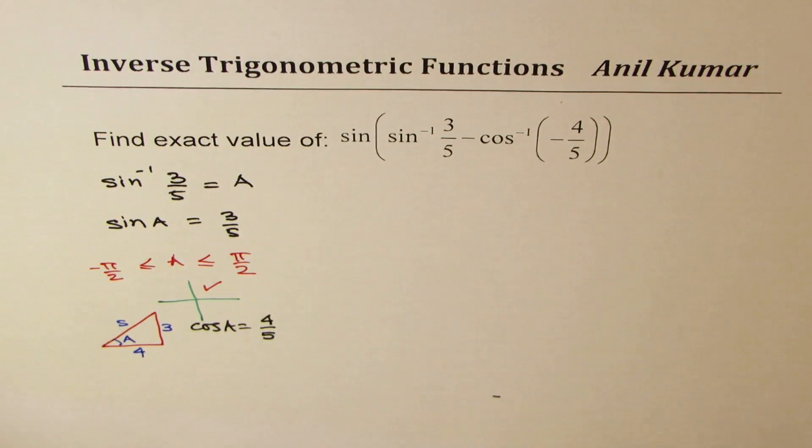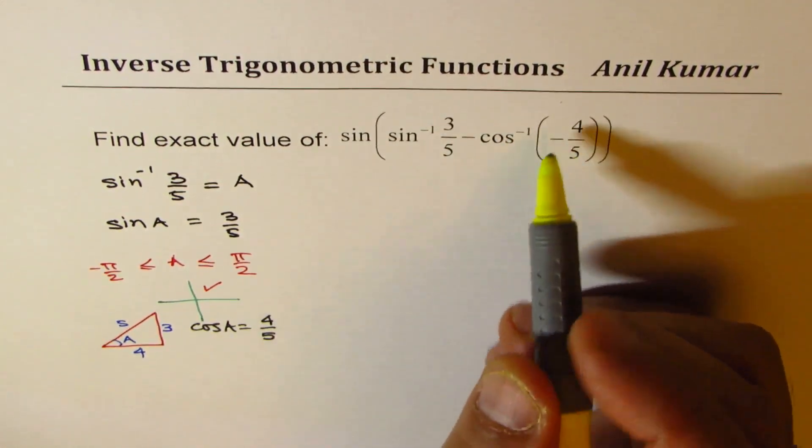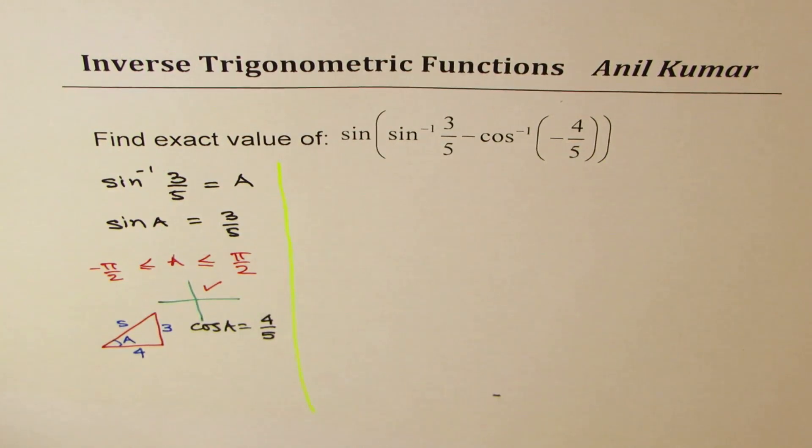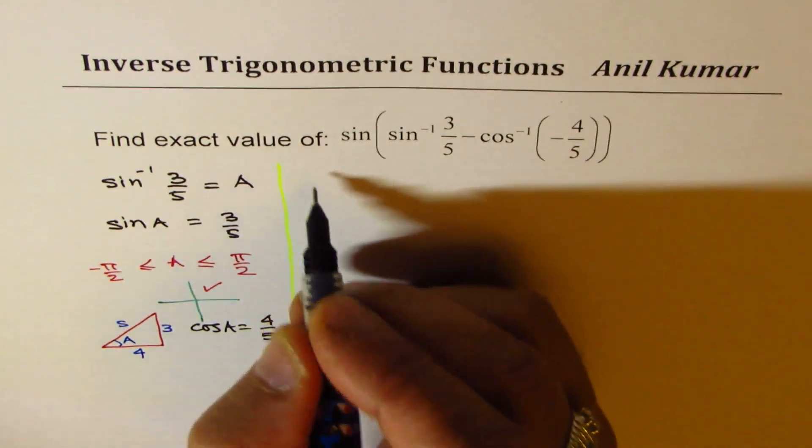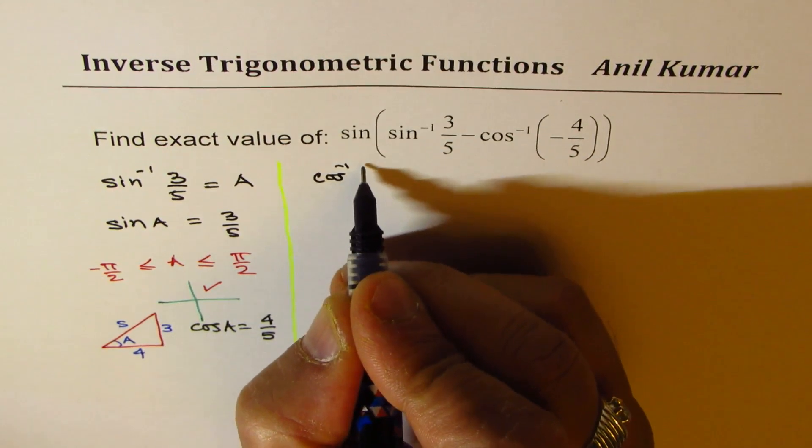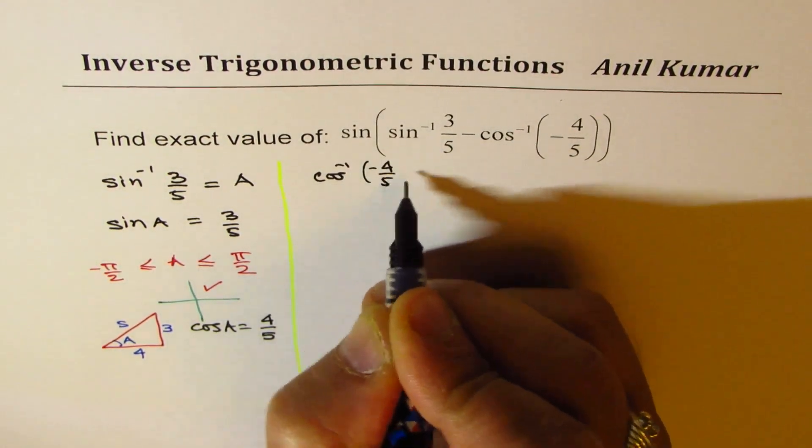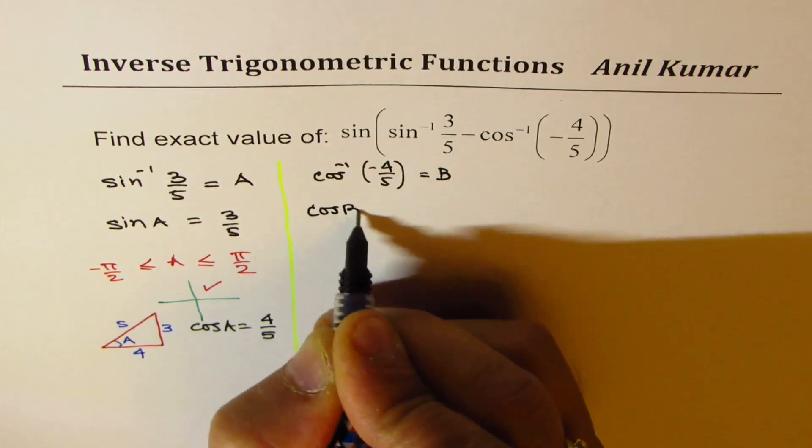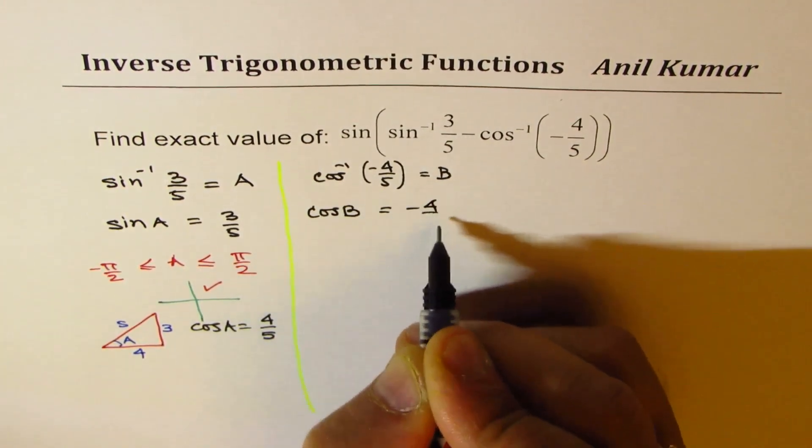Now, let's work with the minus cos inverse value and find the other angle. So, let cos inverse minus 4 over 5 be equal to B. So, what is cos B equal to? Cos B is minus 4 over 5.